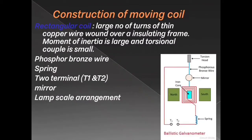Construction of the moving coil ballistic galvanometer consists of: a rectangular coil, phosphorus bronze wire, spring, two terminals T1 and T2, mirror and lamp-scale arrangement, and a horseshoe magnet. The rectangular coil has a large number of turns of thick copper wire wound on an insulated frame. Inside the frame, a cylindrical soft iron core is placed inside the coil to increase the magnetic flux. The moment of inertia is large, and the torque and torsional couple are also large.